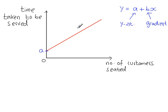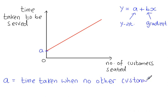So in this case a is the time taken to be served when the number of customers seated is zero. So a is equal to time taken when no other customer in restaurant.